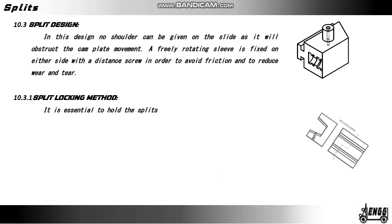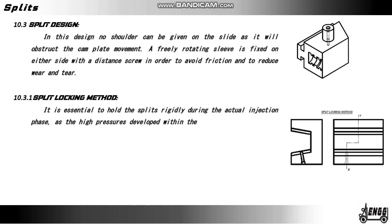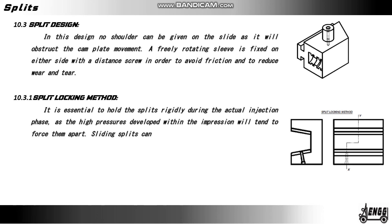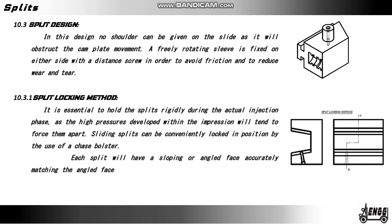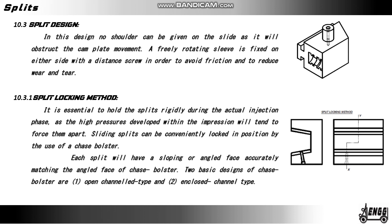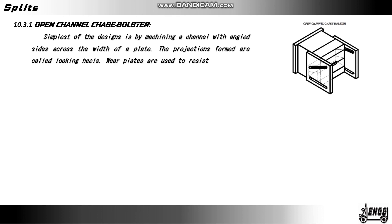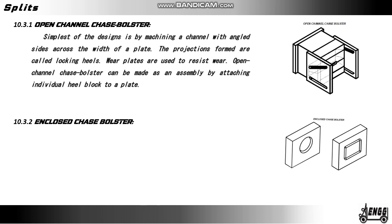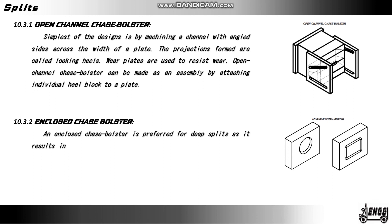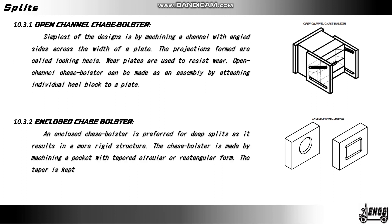Split locking method: it is essential to hold the split rigidly during the actual injection phase, as the high pressure developed within the impression will tend to force them apart. Sliding splits can be conveniently locked in position by the use of a chase bolster. Each split will have a sloping or angled face accurately matching the angled face of the chase bolster. Two basic designs of chase bolsters are: open channel type and enclosed channel type. Open channel chase bolster: the simplest design is by machining a channel with angled slides across the width of the plate; the projections formed are called locking heels. Wear plates are used to resist wear. Open channel chase bolsters can be made as an assembly by attaching individual heel blocks to a plate. Enclosed chase bolster: an enclosed chase bolster is preferred for deep splits as it results in a more rigid structure. The chase bolster is made by machining a pocket with tapered circular or rectangular form; the taper is kept 2 to 3 degrees more than the finger cam angle.